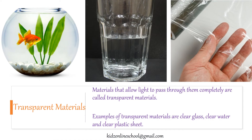Transparent materials: Materials that allow light to pass through them completely are called transparent materials. Examples of transparent materials are clear glass, clear water, and clear plastic sheet.